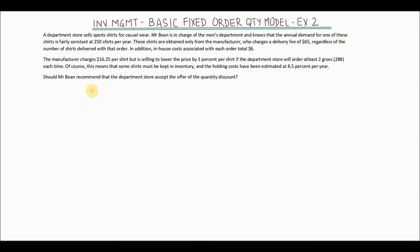Welcome to another video in the series on inventory management. In this video we will look at another example of the basic fixed order quantity model. There are two basic replenishment systems: one is the fixed order quantity, where the quantity of ordering is fixed while the time period when you are ordering can change.